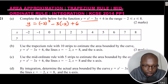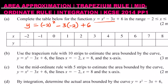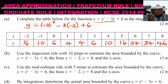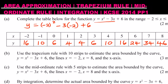Filling in the table: when x = -2, y = 16; x = -1, y = 10; x = 0, y = 6; x = 1, y = 4; x = 2, y = 4; x = 3, y = 6; x = 4, y = 10; x = 5, y = 16; x = 6, y = 24; x = 7, y = 34; x = 8, y = 46. Simply substitute each x value into the function using a calculator.